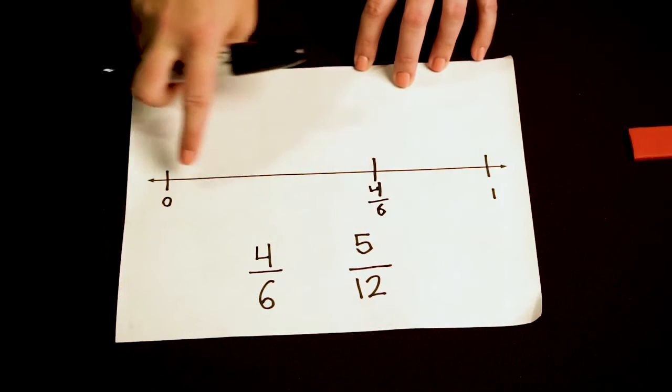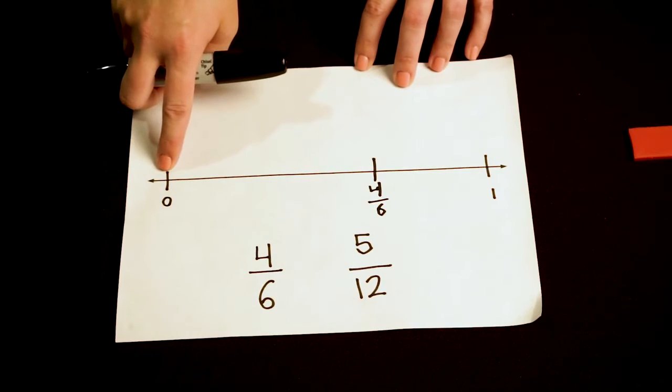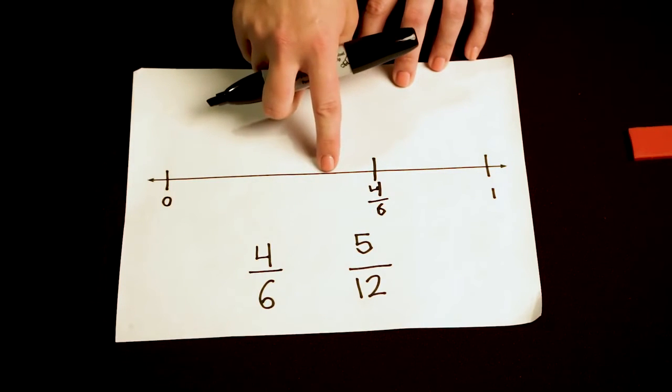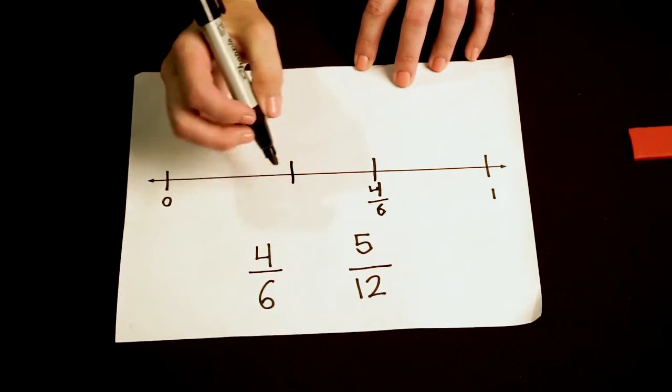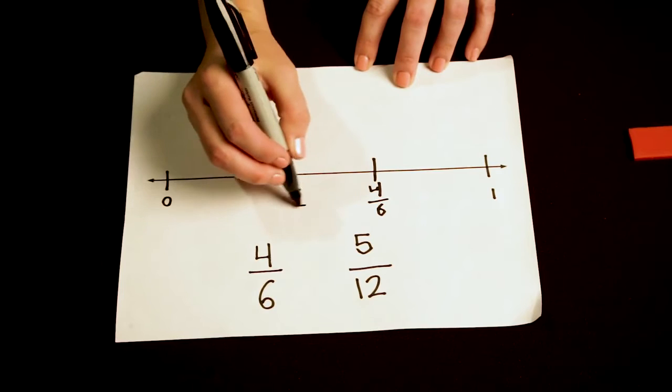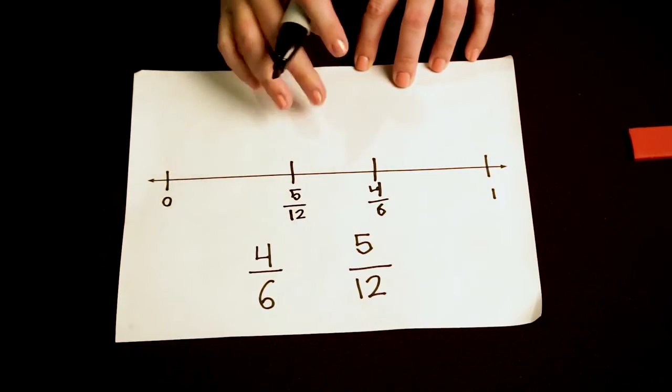Now let's think about 5/12. Is 5/12 close to 0? Not really. Let me think about 1/2. Is 5/12 close to 1/2? Yeah, it's just a little bit less than 1/2. So I will place 5/12 on my number line just about right here.